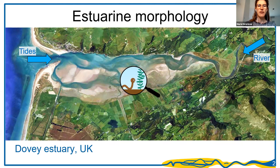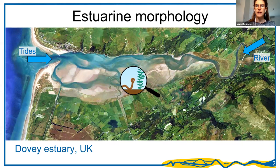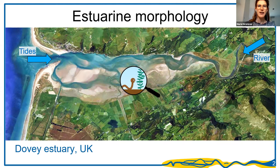This is an example of the Dovey estuary. As you can see, an estuary is governed by both the river discharge on the right-hand side of the picture and by the tides. The morphology of the estuary is governed by lots of different processes — the channels and bar pattern are governed not only by the tides but also by species that grow in the middle of the estuary, and that is actually the topic of my PhD.